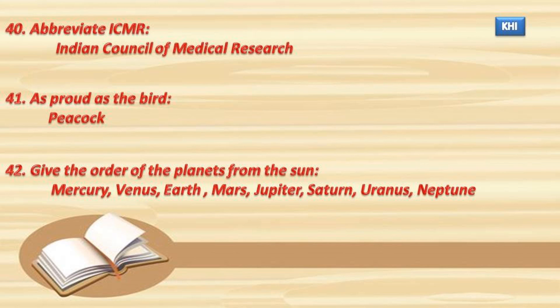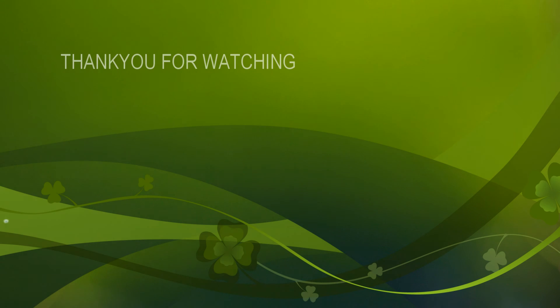42. Give the order of the planets from the sun: Mercury, Venus, Earth, Mars, Jupiter, Saturn, Uranus, Neptune. Thank you for watching.